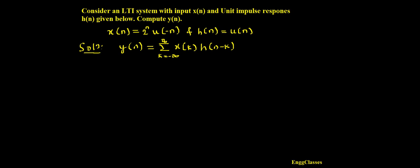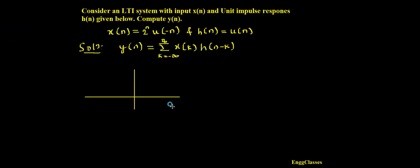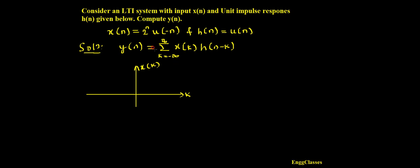I need to plot first the input as well as the impulse response. I'm going to sketch the first signal, x of k, with respect to k. The signal is 2 to the power k — a growing exponential — multiplied with u of minus k, which means the signal exists from minus infinity to 0. The growing exponential 2 to the power n exists from minus infinity to plus infinity, but multiplied with u of minus n it only exists from minus infinity to 0.